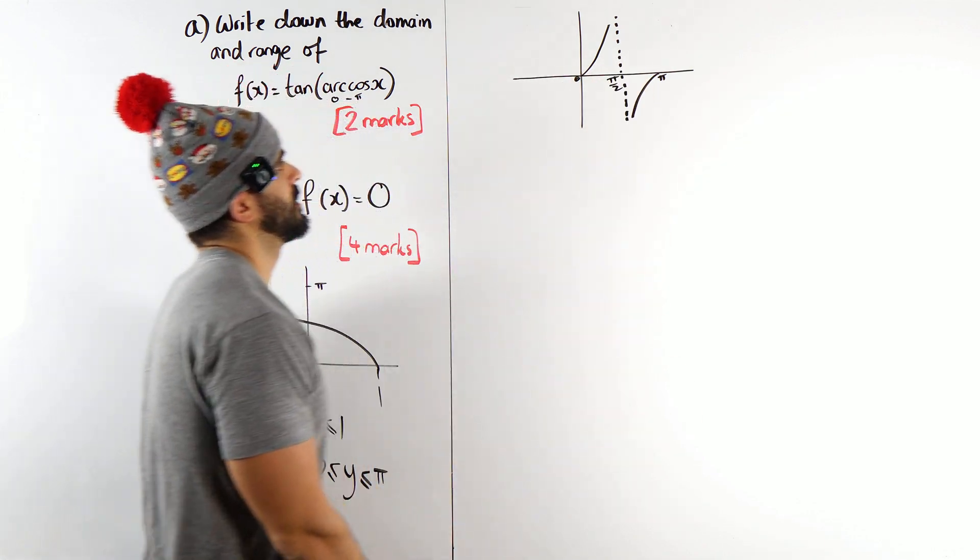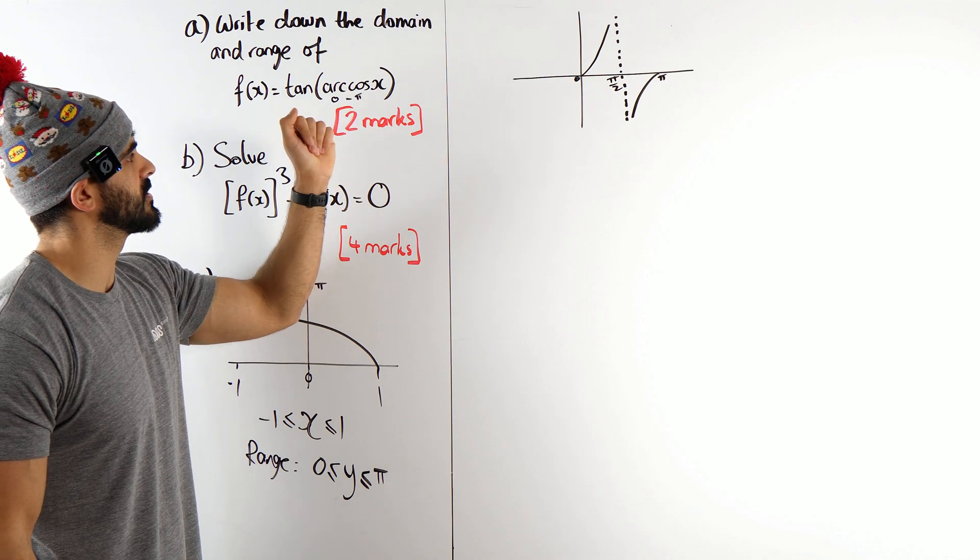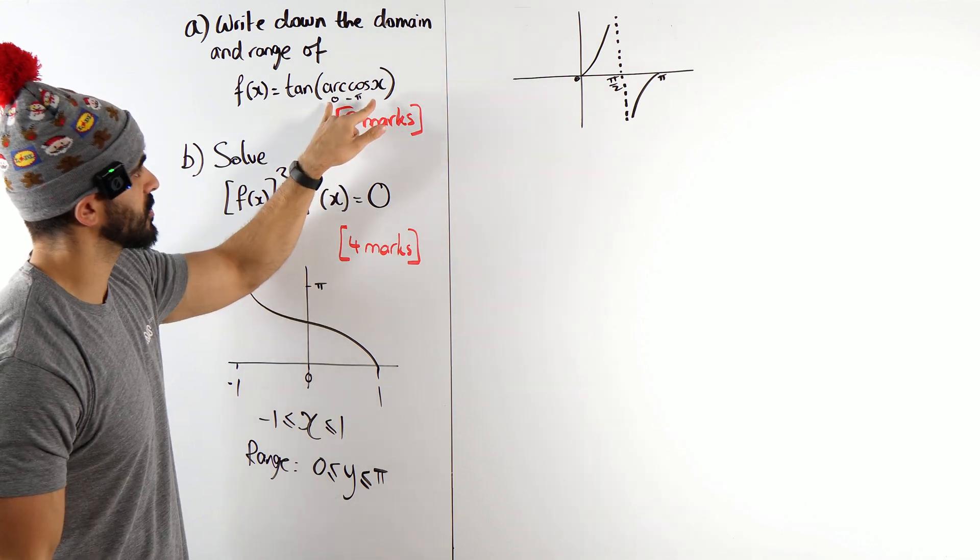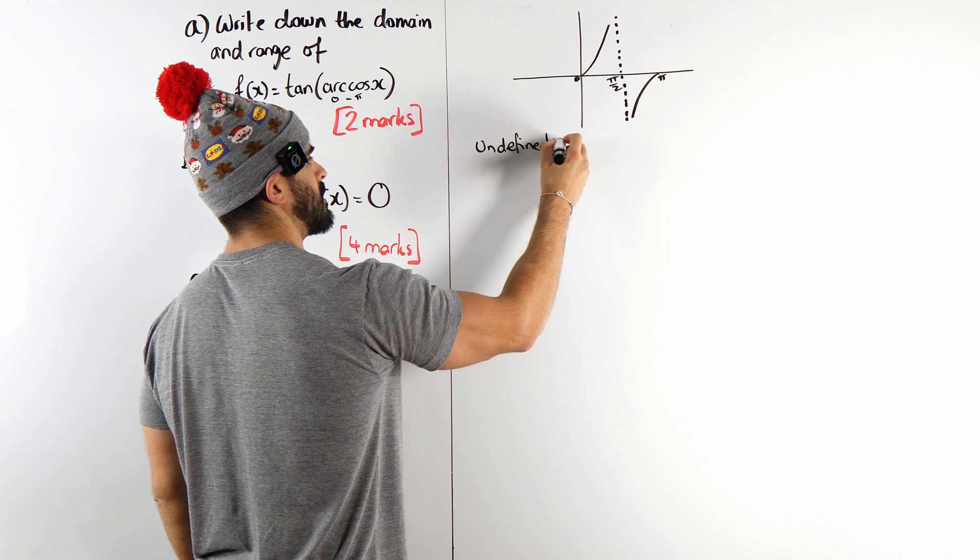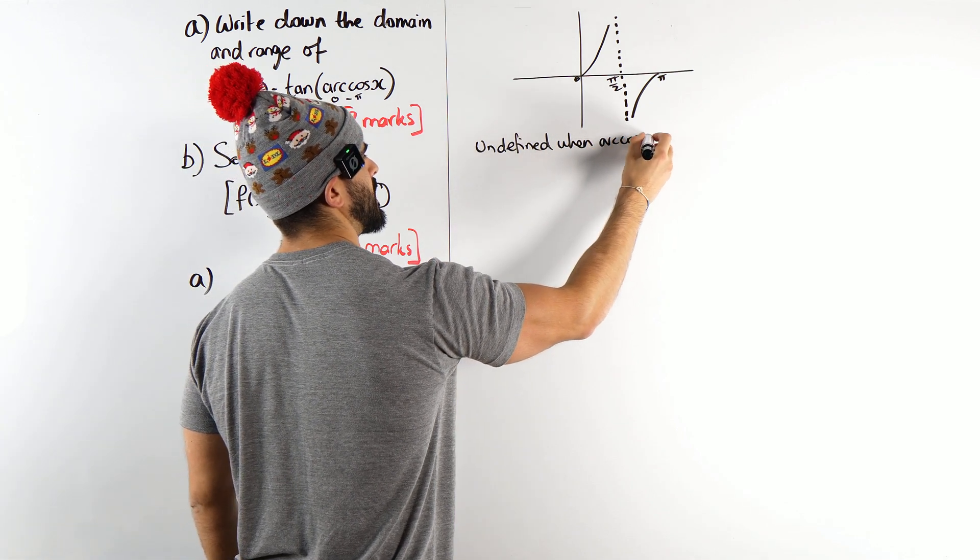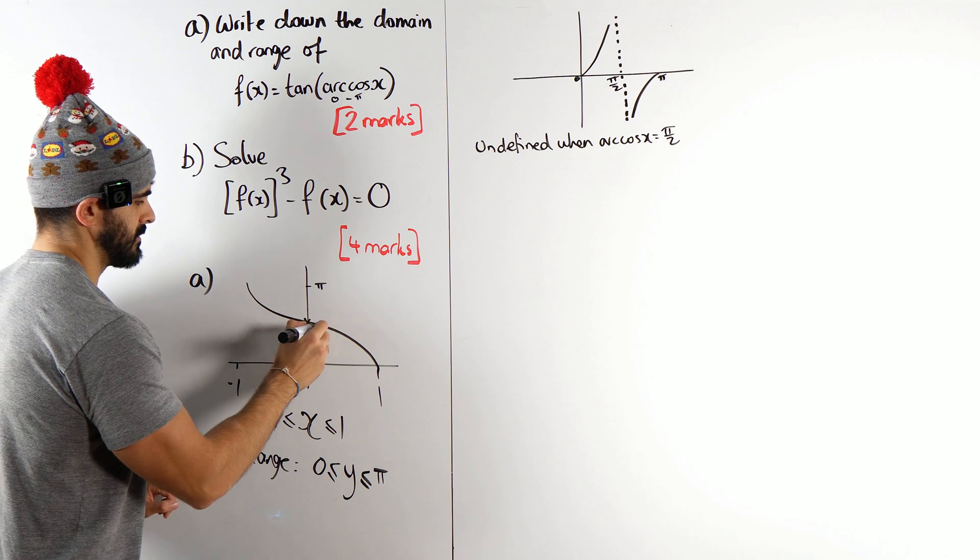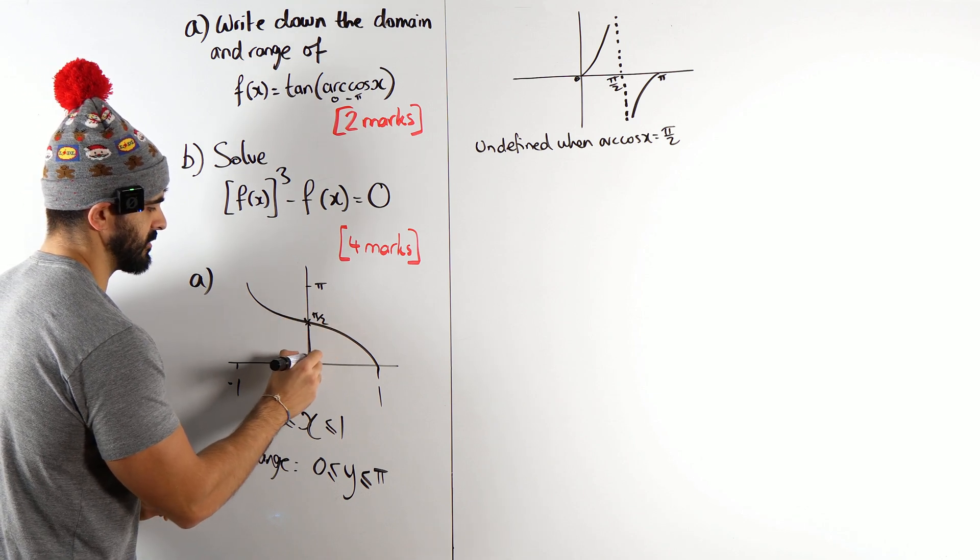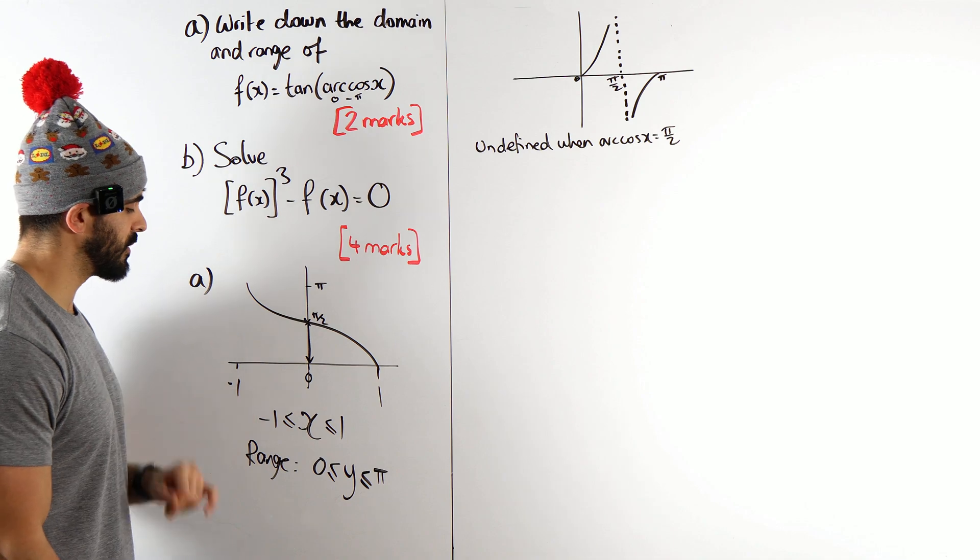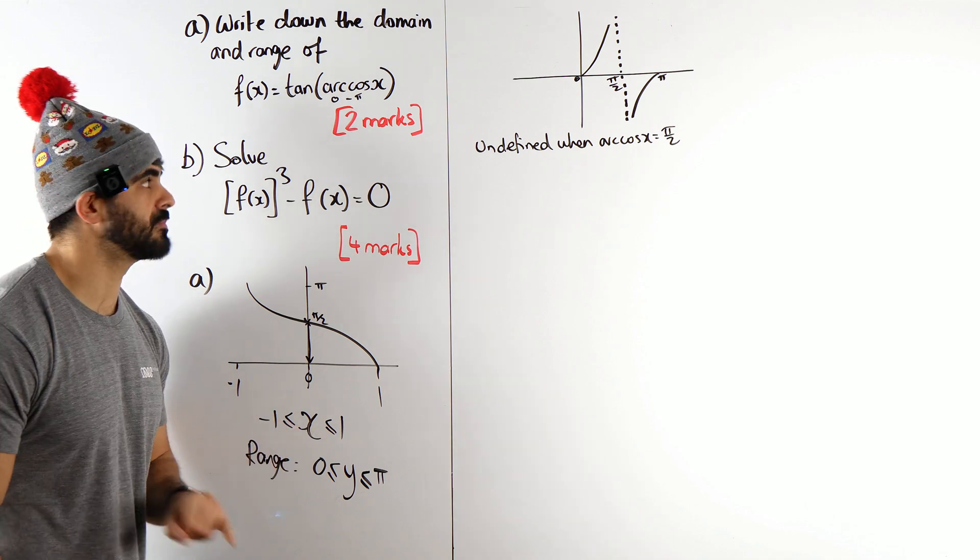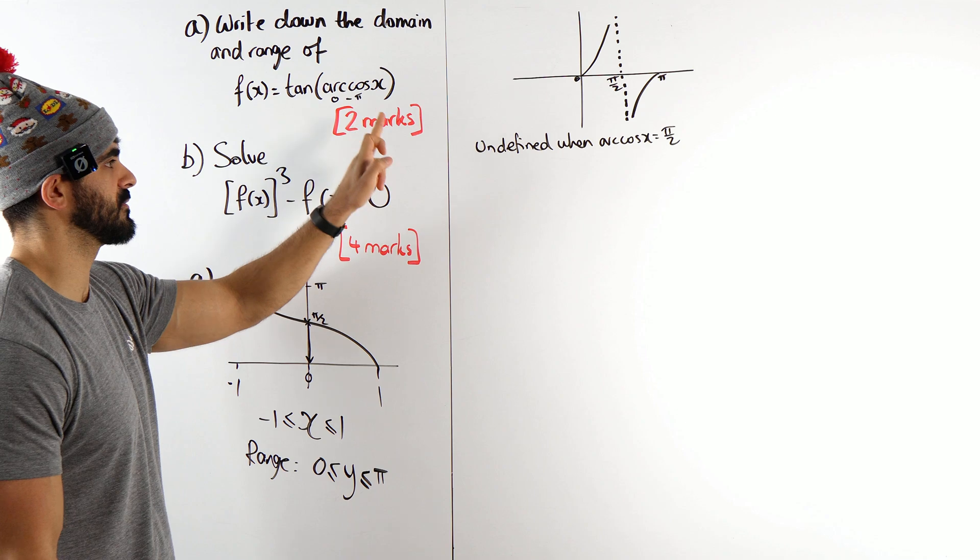Okay, so this whole function is undefined when x is, no sorry, when arccos(x) is pi over 2. So it's undefined when arccos(x) is pi over 2. Now when is that? Here, which is zero. So this is my domain. However, I need to say that x cannot be zero though, because if you sub in zero, you'll get arccos of zero, which is pi over 2, and tan of pi over 2 is undefined.